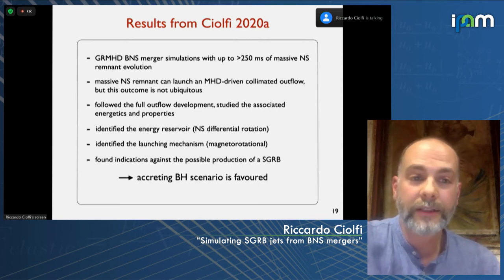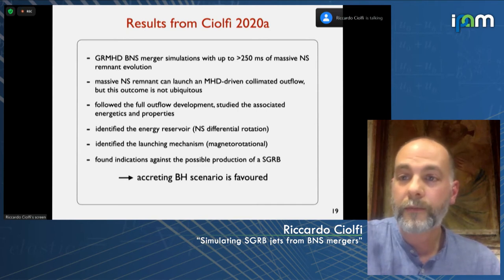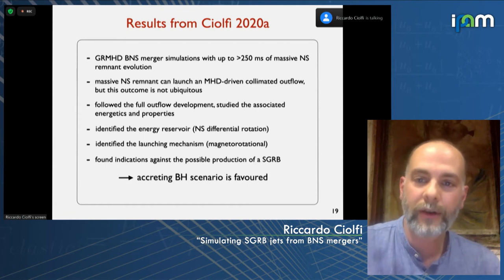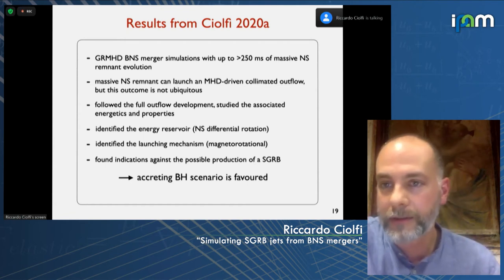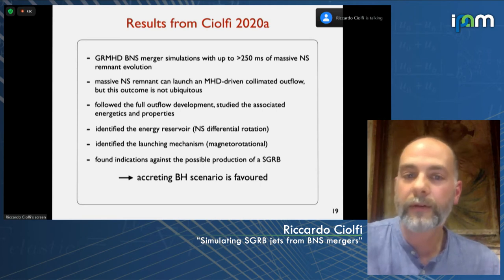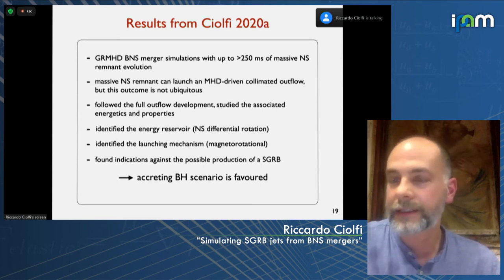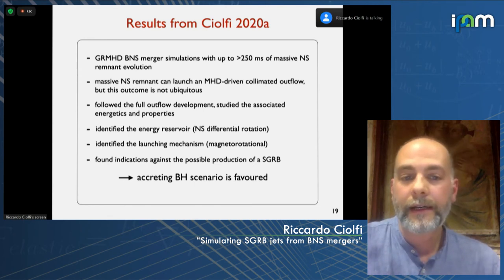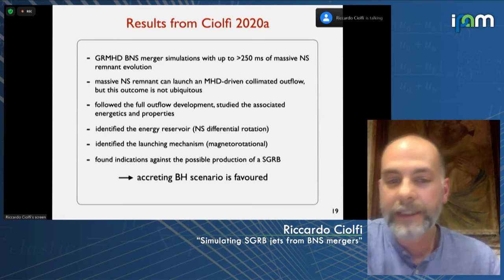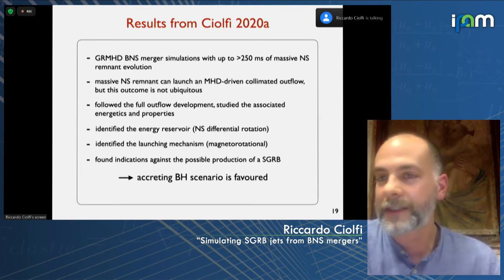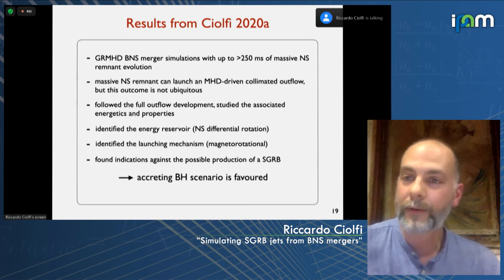To summarize what was accomplished: we performed this very long simulation, found that the massive neutron star remnant can naturally produce a collimated outflow — though not ubiquitously — followed the outflow development in full, studied the energetics, identified the energy reservoir and launching mechanism. We also found this indication against the magnetized neutron star scenario and in favor of the black hole scenario.